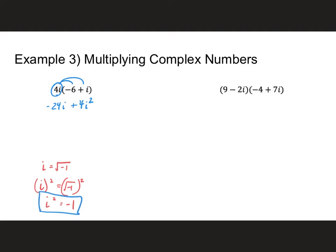When you have i to some power, we can simplify it down. In this case, we know i squared equals negative 1. So I go back to my problem and replace the i squared with negative 1. That gives me 4 times negative 1, which is negative 4, and then minus 24i. Putting the real part first: my final answer is negative 4 minus 24i.